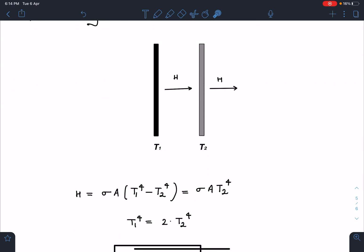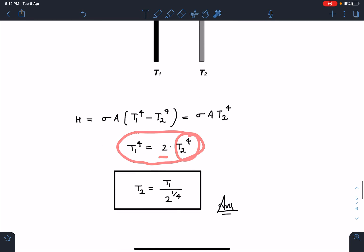I'm going to get T₁⁴ equals 2·T₂⁴, and we are going to get T₂ equals T₁ / 2^(1/4). This is going to be my final answer.